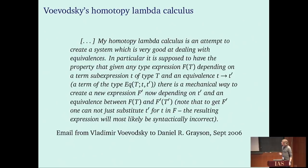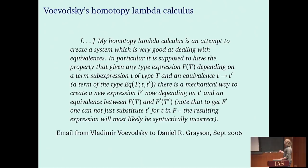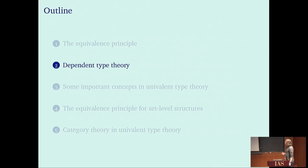Vladimir says the following in an email to Dan Grayson in 2006: 'My homotopy lambda calculus is an attempt to create a system which is very good at dealing with equivalences. In particular, it is supposed to have the property that given any type expression f of t, depending on a term sub-expression t of type T, and an equivalence from T to T prime, there is a mechanical way to create a new expression f prime.' The gist is that Vladimir wants to transport statements and proofs along an equivalence of objects T and T prime.